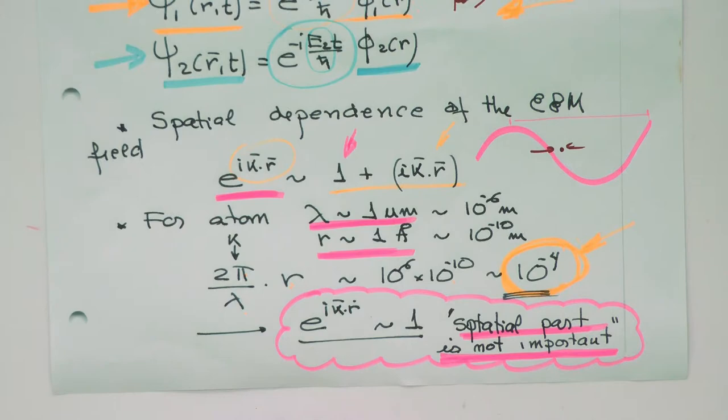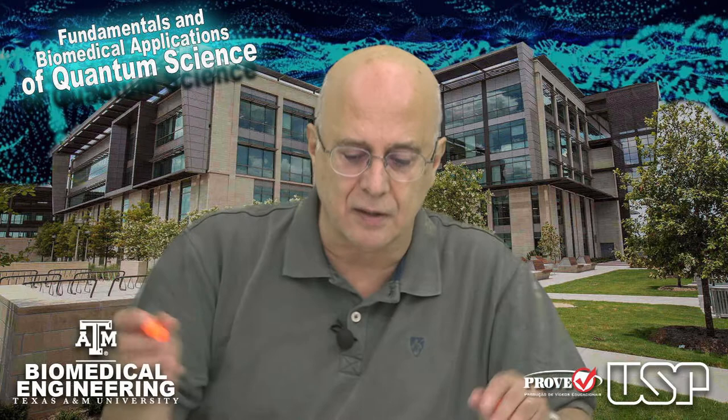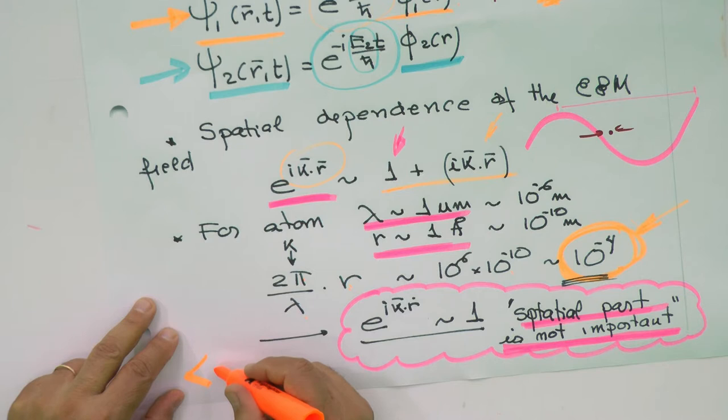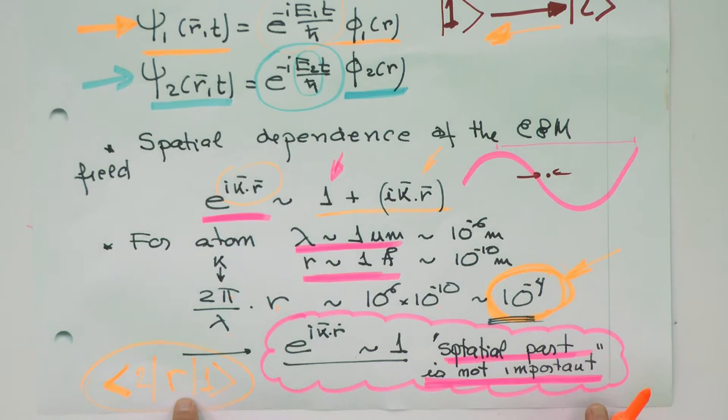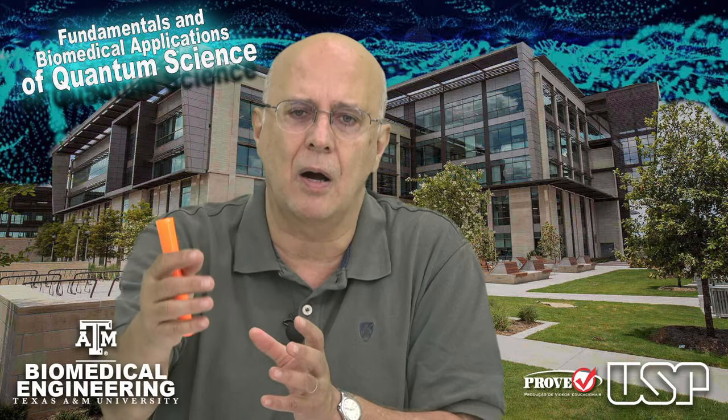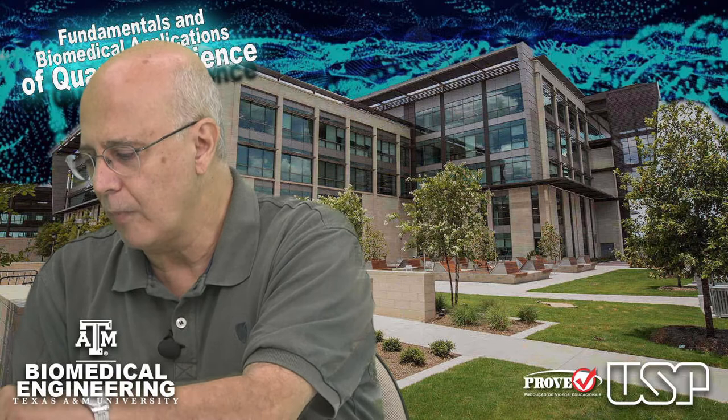Because we made this approximation, the consequences are very interesting. The matrix element we spoke of in the previous lecture reduces to a matrix element like: the final state, the displacement r, and the initial state. If this is not zero, it means we have a dipole transition. The physical interpretation is that states one and two are connected through a displacement — making a displacement of the electronic cloud means we're inducing a dipole during the interaction of the radiation with the atom.